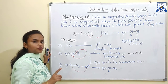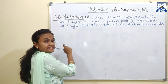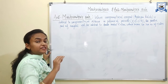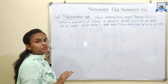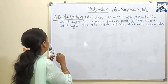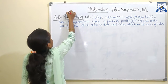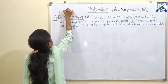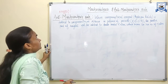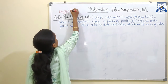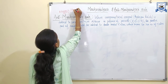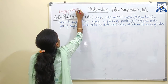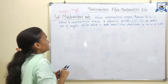Now let's see anti-Markovnikov's rule. As the name itself indicates, anti-Markovnikov's rule is just opposite to Markovnikov's rule. This rule is also known as the Kharash effect, as it was discovered by the scientist Kharash. It is also known as the peroxide effect, as the rule is applicable only when the reaction is carried out in the presence of peroxide.